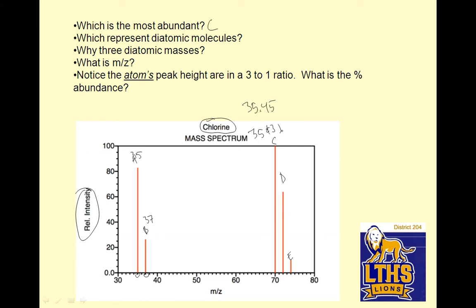So which represent diatomic molecules? Well, 35 is the most abundant, and double 35 would be 70. And which represents diatomic molecules. So this would be Cl2 that equals 70. Diatomic. This would be Cl2 that equals 72, so it would be a 35 and a 37. This one would be 71, 72, 73, 74. This would be 74, which would be a 37 and a 37.